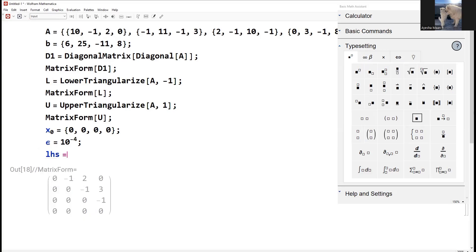Left hand side formulation: lhs equals L plus D1. D1 is our diagonal entries. All of the variables are coming together with the lower triangulation entries. Right hand side will be minus U dot x naught plus b.